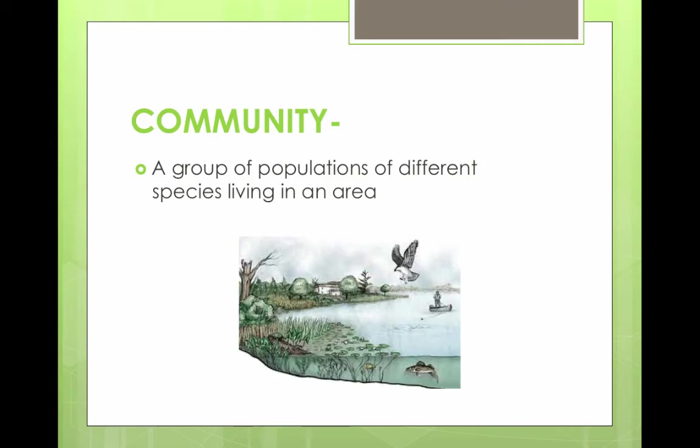A community is a group of populations of different species living in an area. All of the different living organisms in an area are part of the community, and the community does not include any non-living or abiotic factors.